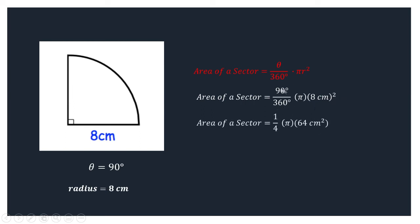So simplifying 90 over 360 would be 1 fourth, and then 8 squared is 64. Simplifying, we can have 16 pi square centimeters. Or we can say that this is approximately 50.27 square centimeters as the area of this region.